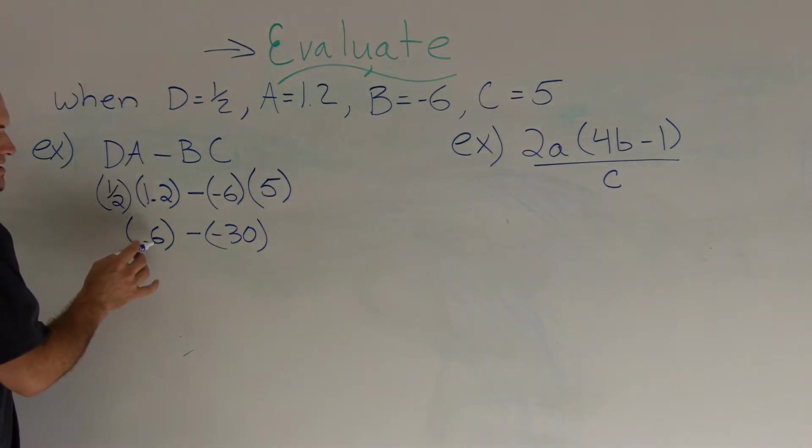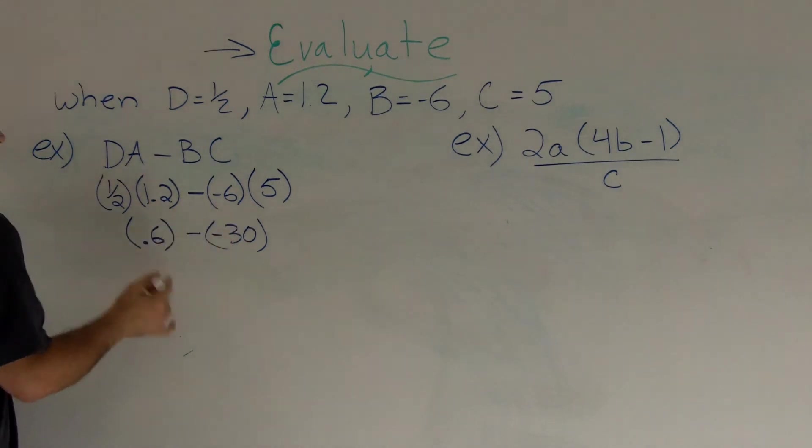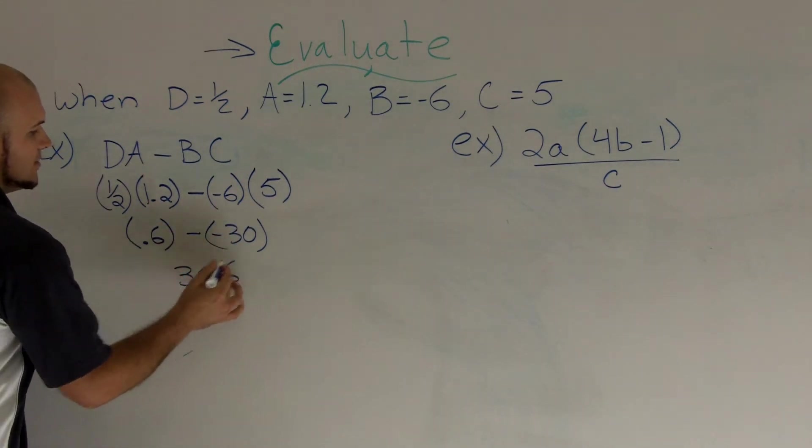Or you can say if you have 0.6 and you are subtracting the negative 30, therefore, then, now you're going to have a 30.6. You're pretty much going to be adding that on top. So your last final answer would be 30.6.